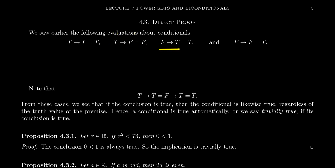If the premise is false and the conclusion is true, that makes it a true conditional. Also, if the premise is false and the conclusion is also false, that also makes it a true conditional. If the premise is false, then the conclusion is under no obligation to be true or false, and therefore the conditional statement is still a true statement.